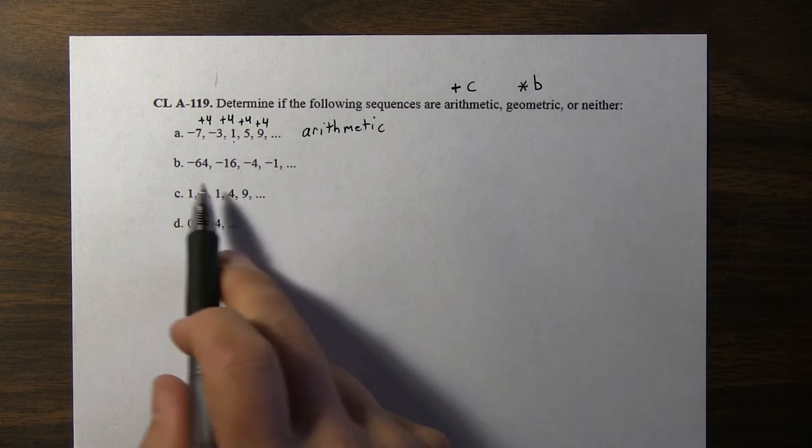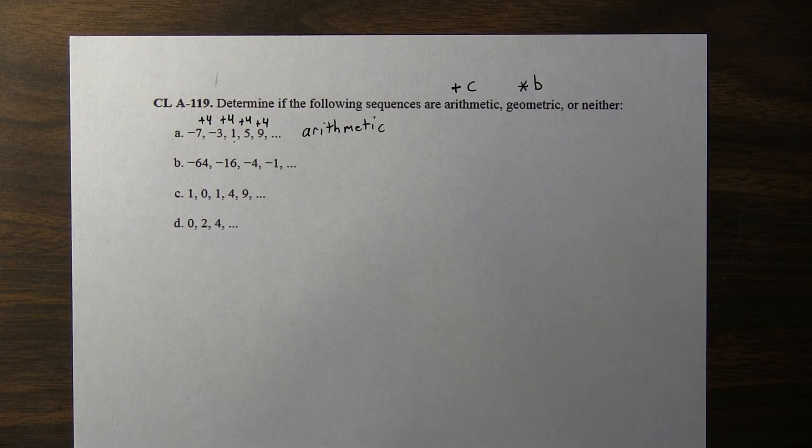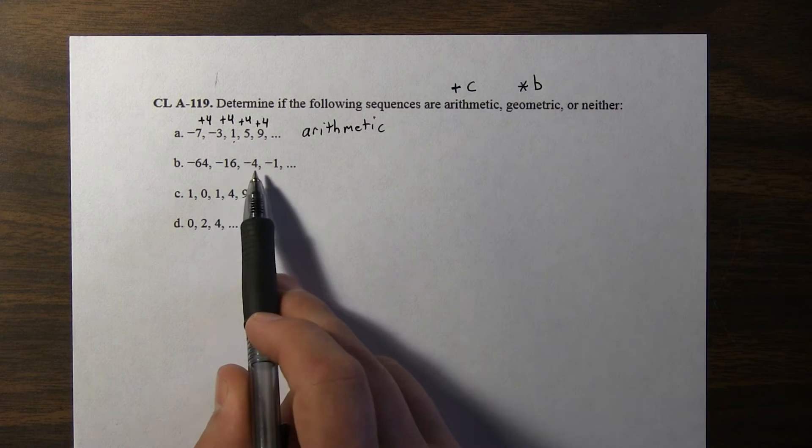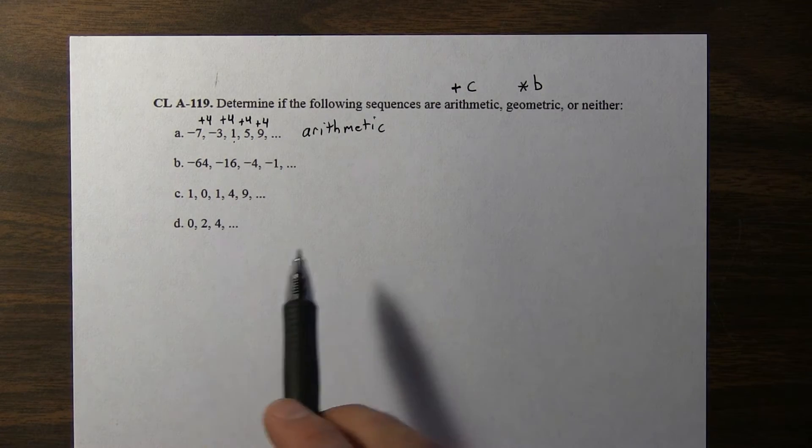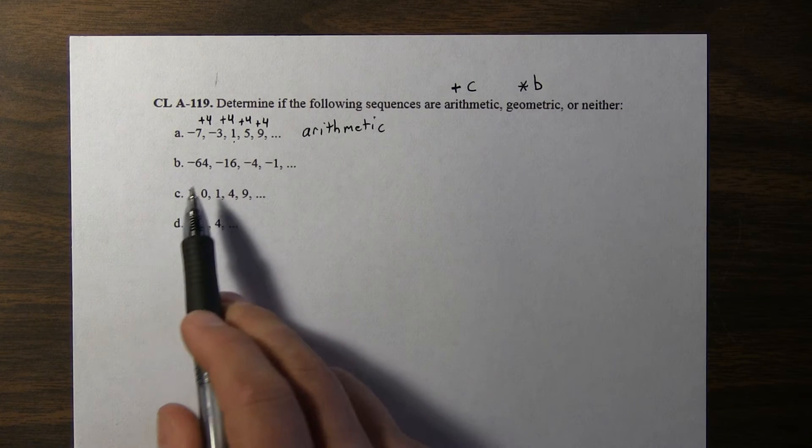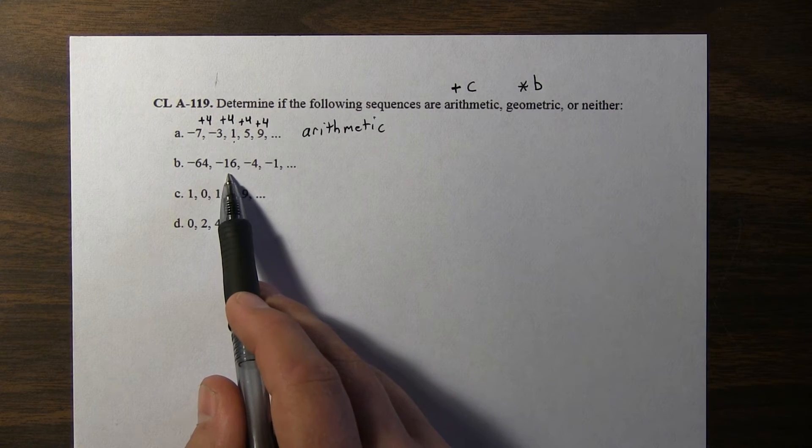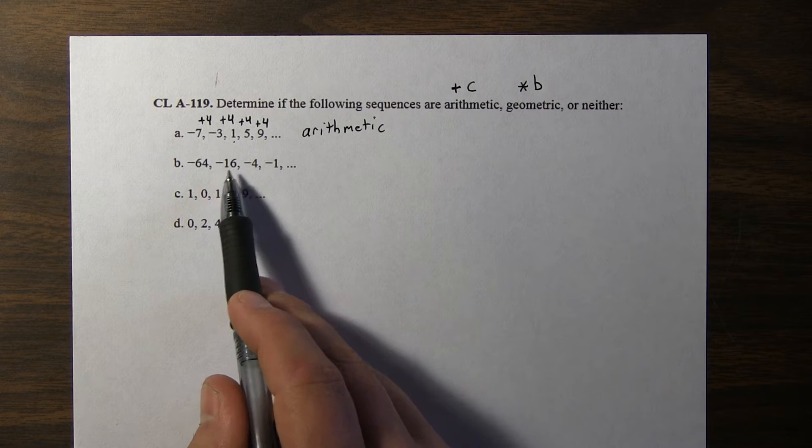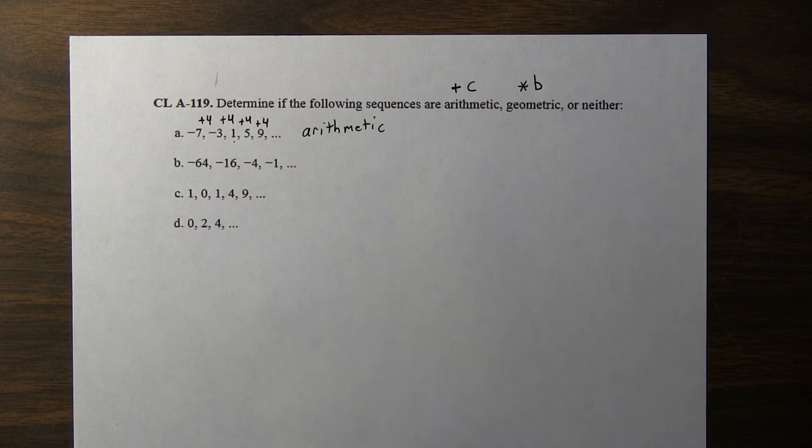On this next one, from negative 64 to negative 16 is plus 48. But from negative 16 to negative 4 is not plus 48. So this one can't be arithmetic. Let's see if it's geometric. Negative 64 divided by 4 is negative 16, and negative 16 divided by 4 is negative 4, and negative 4 divided by 4 is negative 1. So actually...